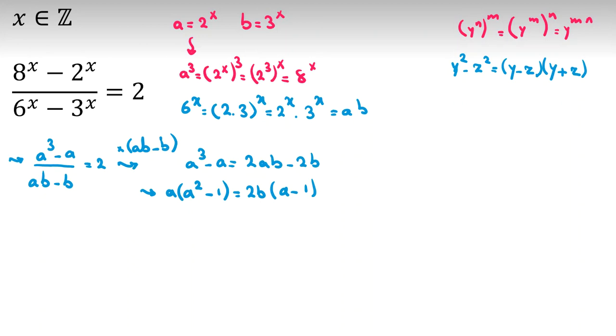By this rule, I can say left-hand side is a, a minus 1, a plus 1, and right-hand side is 2b, a minus 1. So I want to cancel a minus 1 from both sides, but I should consider two cases, a minus 1 is 0 or not.